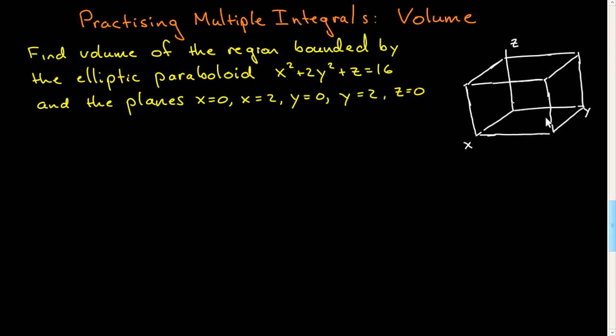And then that just leaves what is going to be the top of the region I have to find the volume of. And that's going to be given by this. And what is that going to look like? Well, we can see when y is equal to zero, it's going to give me z is equal to 16 minus x squared. And in fact, I should say when y equals zero, z is 16.